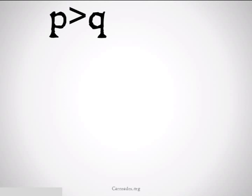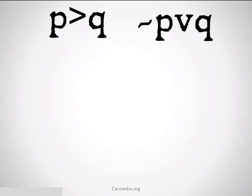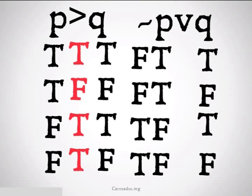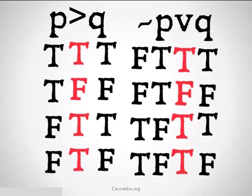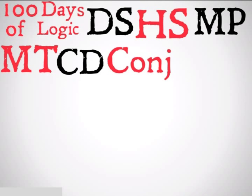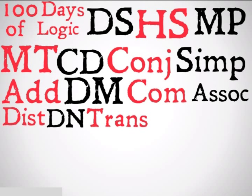Let's take a look at the truth tables now. P implies Q is the same thing as not-P or Q. This may seem a little counterintuitive at first, but when we look at the truth tables below, we see that they are a perfect mirror image of each other. So these are replaceable salva veritate. We're going to represent material implication with I-M-P-L.